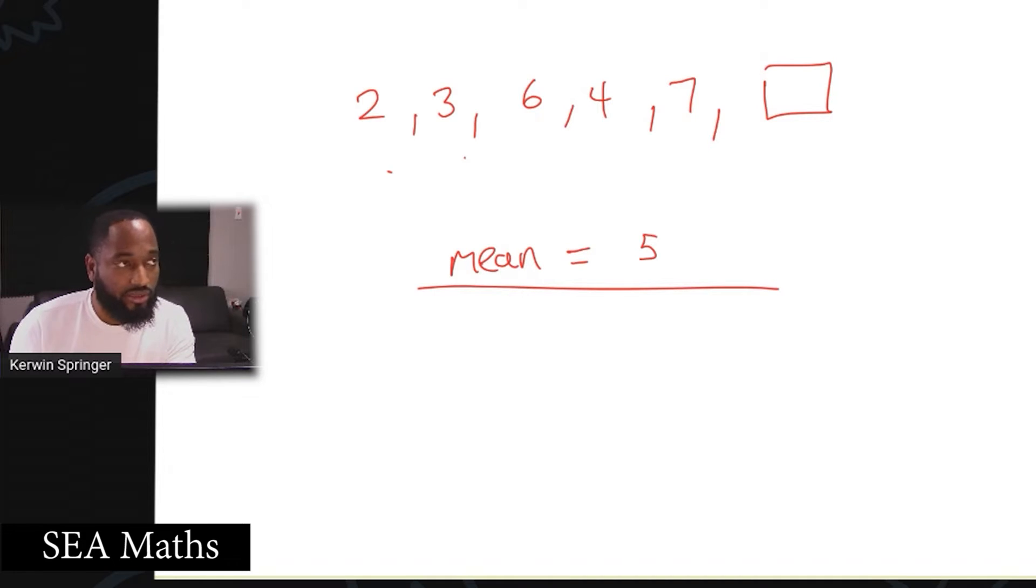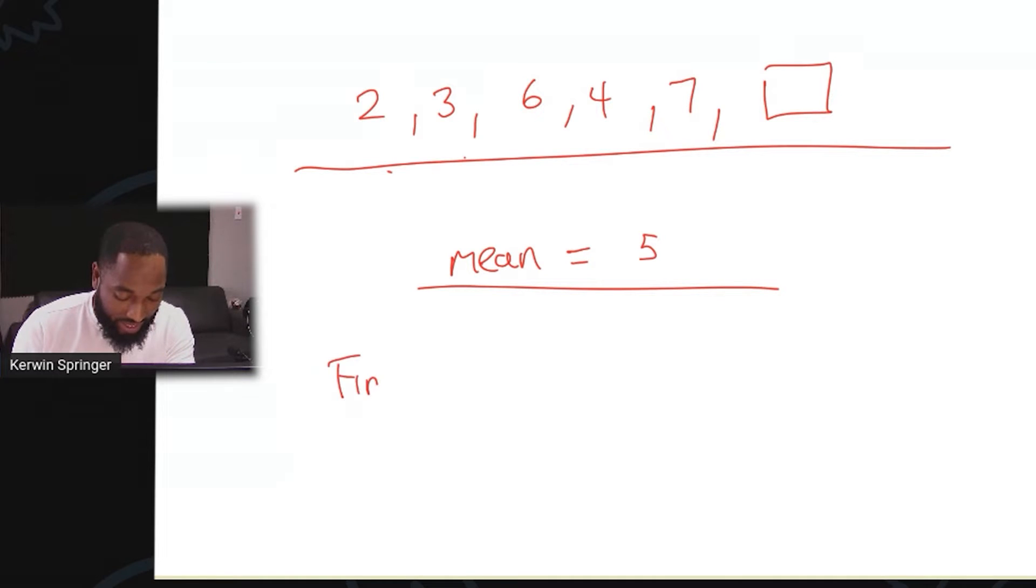So this is SE Maths. Let's say I have six numbers: 2, 3, 6, 4, 7, and there's a missing number. They told us the mean of all the numbers is 5 and we are asked to find the missing number. This could go for one or two marks, this is like a simple version of it.